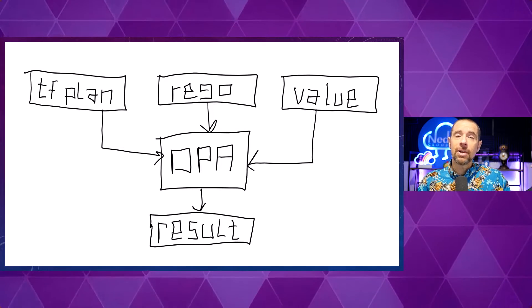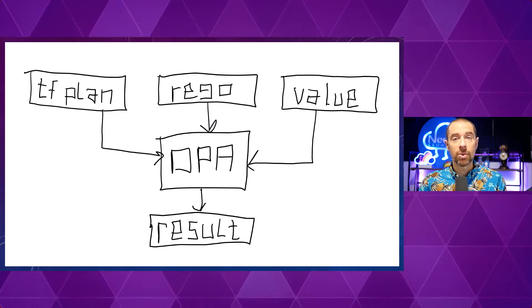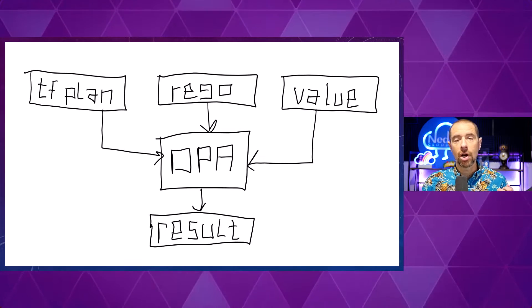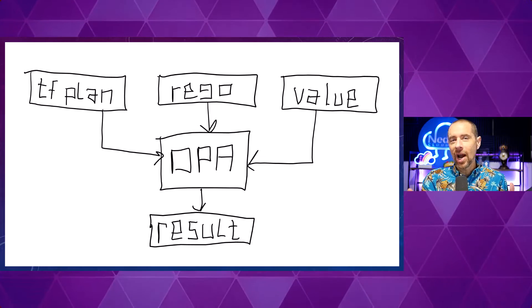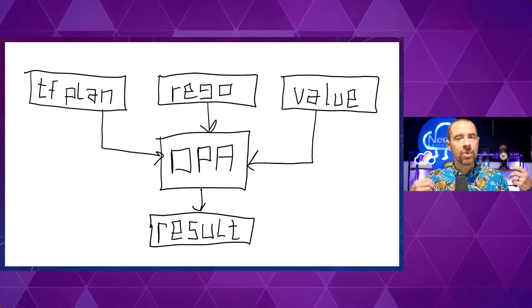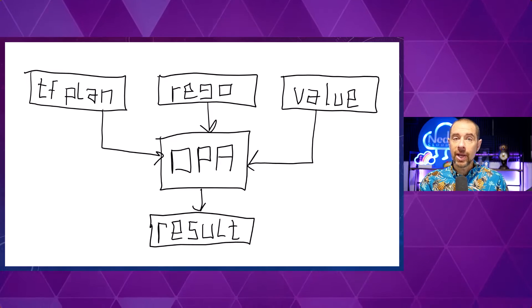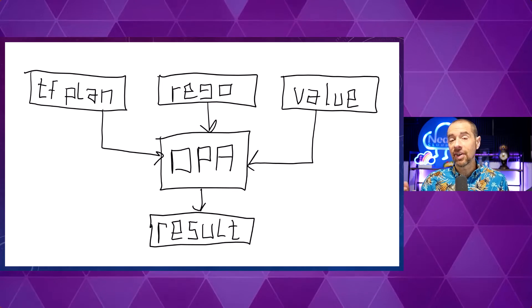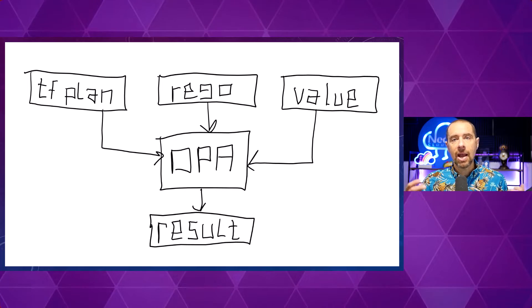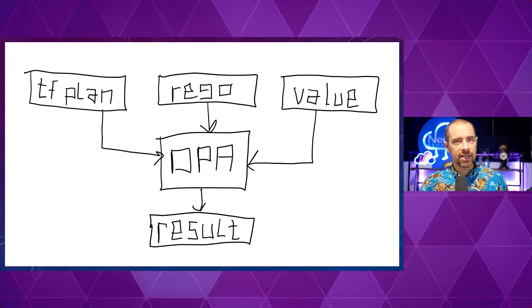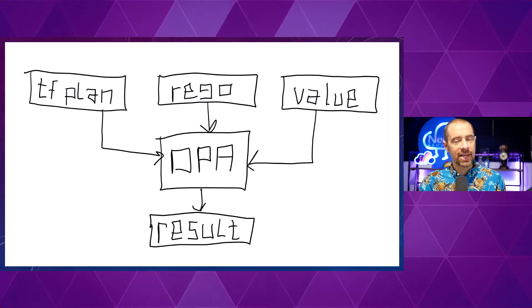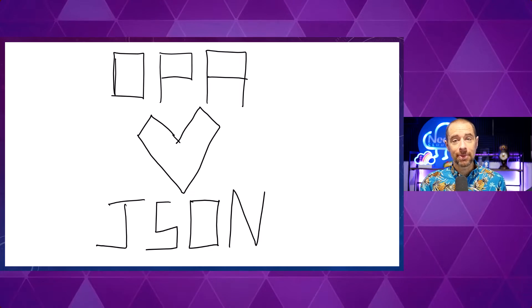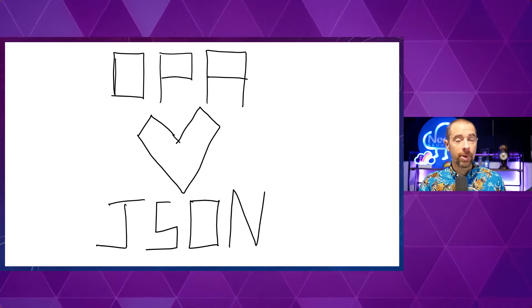Now, in the case of Terraform, where is the input data coming from that we want to evaluate? That's coming from your Terraform plan. So you have your Terraform configuration, you're ready to apply it to your target environment, but first you want to do a dry run using Terraform plan. You run Terraform plan, you get plan data as output, and then you can evaluate that plan data using OPA and policies written in Rego. Now, if you know anything about Terraform plan, that output is not in the right format to send into OPA, because OPA expects input data in JSON format — OPA loves JSON.